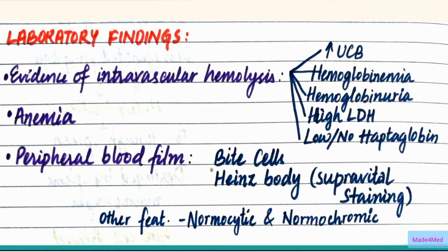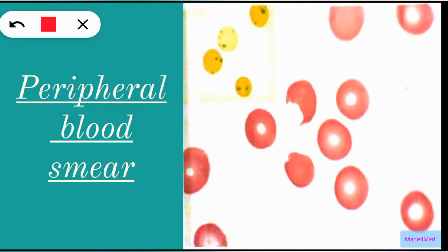Other features include normocytic and normochromic RBCs. On the peripheral blood smear you can see RBCs that appear as if they have been bitten off, and on supravital staining you can see the denatured hemoglobin in the form of Heinz bodies.